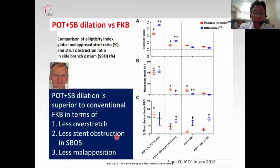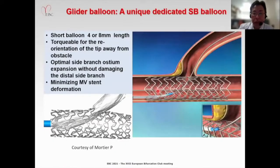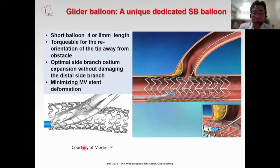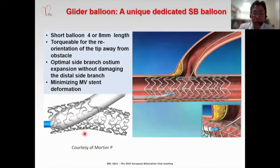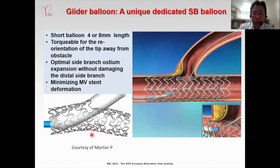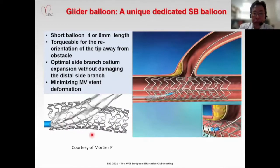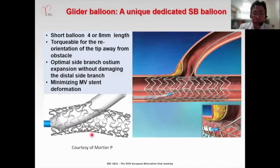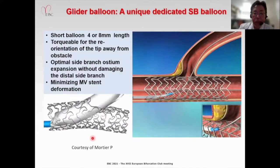Spot and side branch dilation has been reported as superior over final kissing balloon inflation in terms of less over-stretch, less stent obstruction in the side branch ostium, and less mural position in bench testing. However, side branch dilation with a long balloon has the risk of stent deformation. So we propose using an ultra-short balloon — the Glider balloon — dedicated for the side branch. We usually use a 4mm length balloon, which is unique for the side branch direction.